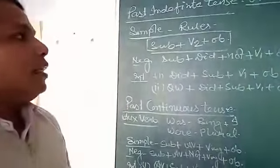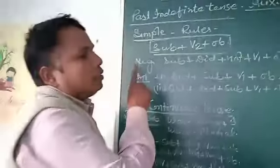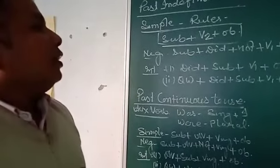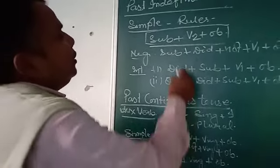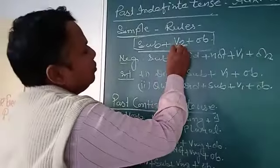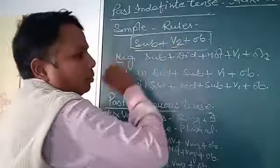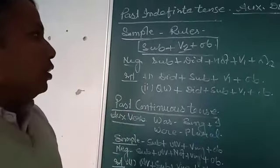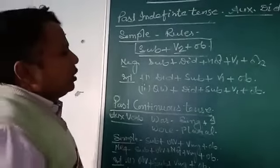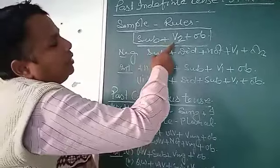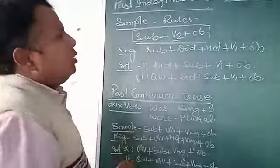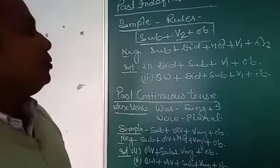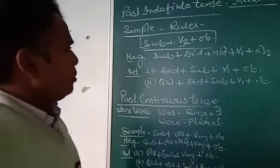How will you recognize that a sentence is past tense? There is only one recognition: the form of the verb, which is the second form. When you are looking at the sentence, identify the verb. If the verb is in second form, it will be past tense and that will be simple past.